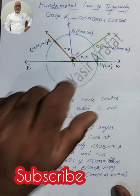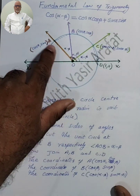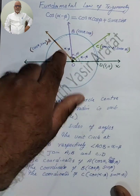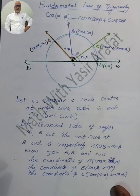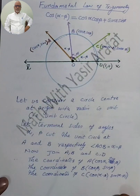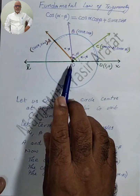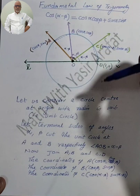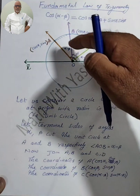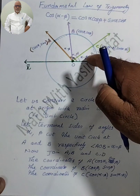These are two congruent triangles because OA = OB = OD = OC (all radii of the unit circle), and angle AOB = angle COD = α minus β. So two sides and one included angle are equal, therefore triangle AOB is congruent to triangle COD. Since the two triangles are congruent, their remaining sides are equal.